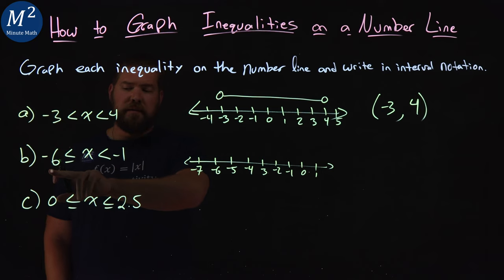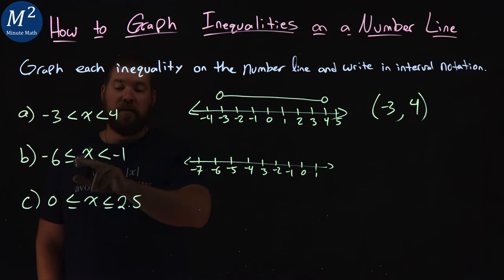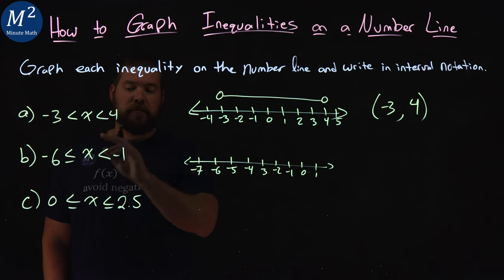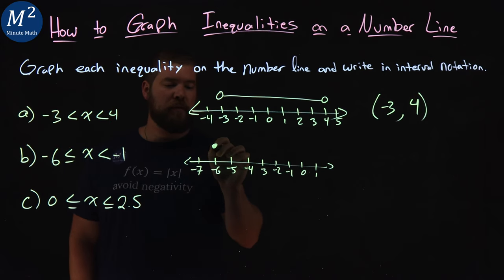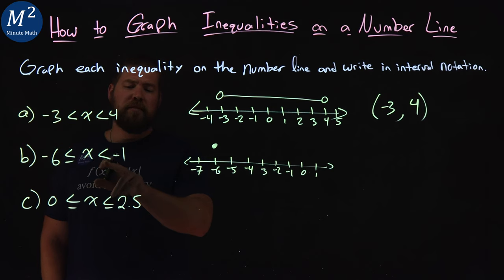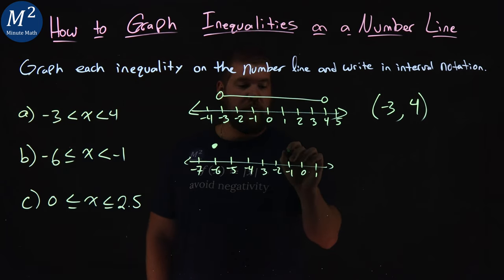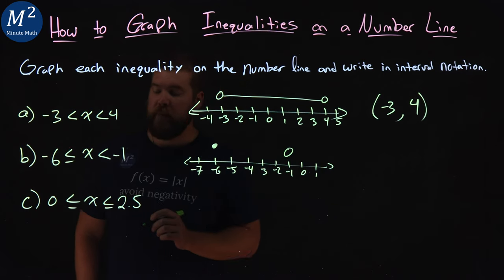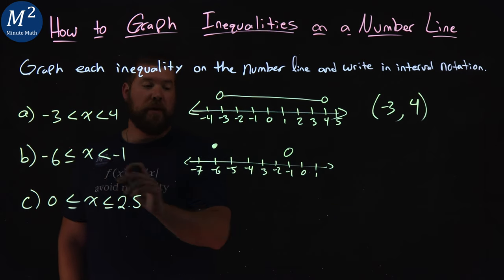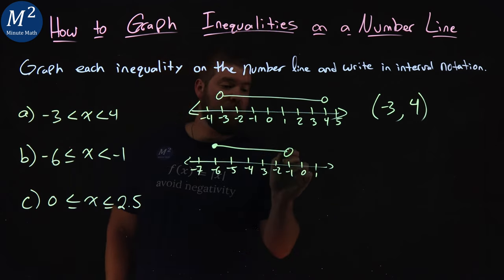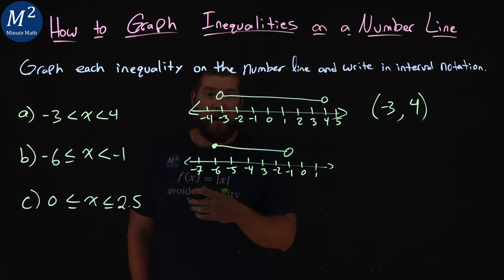Let's start with negative 6. x can equal negative 6. Remember, negative 6 is less than or equal to x, so at negative 6 we're going to put a closed dot. The second part, x is less than negative 1, not equal to, so we put an open circle there at negative 1. Now x is between these two values, so we put a line that connects these two, and there we have our graph.